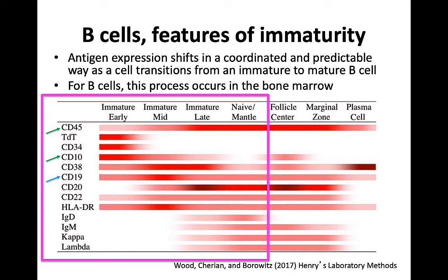We've talked about markers that decrease in expression with maturation. Let's talk about markers that do the opposite — consider CD20 and kappa and lambda light chain. These three markers will increase in intensity as a B-cell matures, with normal mature B-cells having high levels of CD20 and expression of either kappa or lambda light chain.